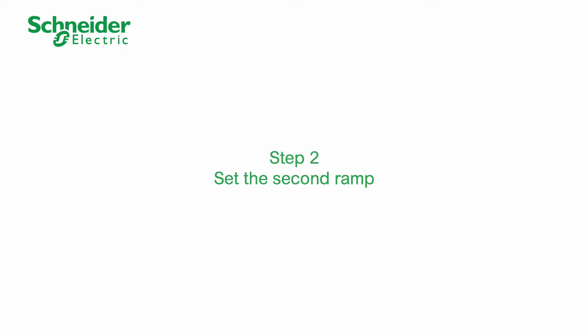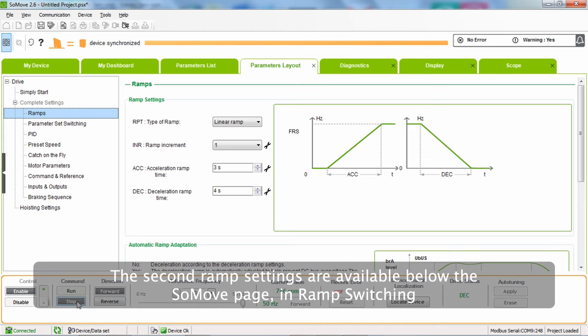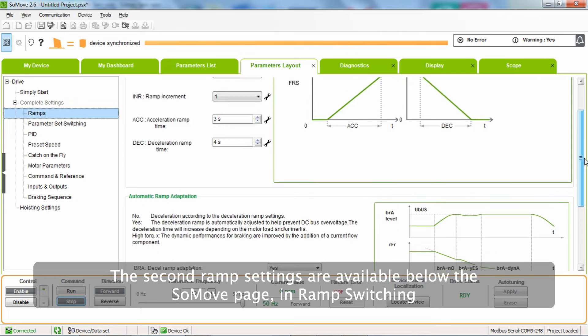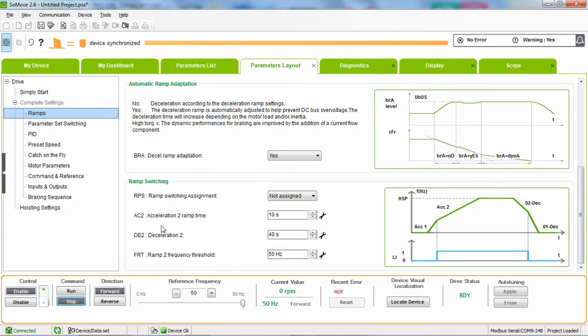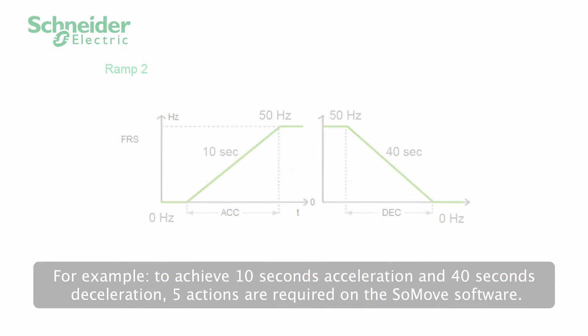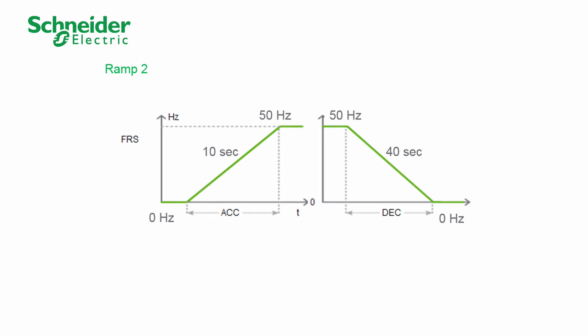Step 2. Set the second ramp. The second ramp settings are available below the SoMove page in ramp switching. For example, to achieve 10 seconds acceleration and 40 seconds deceleration, five actions are required on the SoMove software.